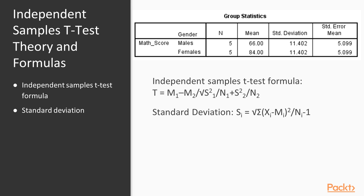In terms of theories and formulas, the independent samples t-test requires an independent variable that's categorical — in this example, gender — and a continuous dependent variable, in this case math score. What we're doing is comparing the mean of one group with the mean of the other. The t-score equals the mean of group one minus the mean of group two, taking into account not only the means but also the number of cases and the variation.